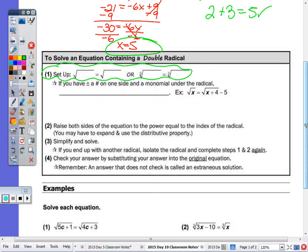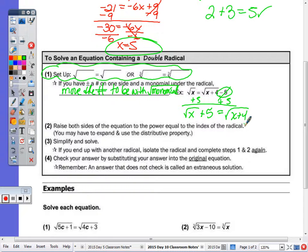If you have a plus or minus, like this question here. It is a radical equal to a radical, but there's a minus five on one side. If that's the case, I want you to move the number to be with the monomial. So how would I move the five over? So add the five. It's going to be the square root of x plus five equals the square root of x plus four. It's just easier to have that plus five with the monomial, one term instead of the binomial two.